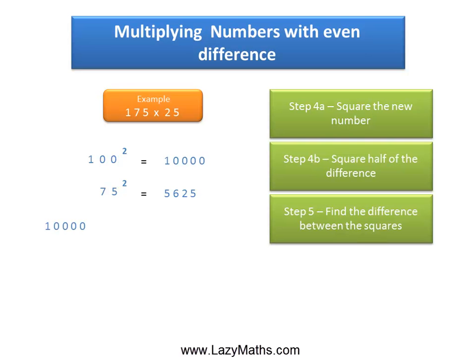And then the final step involves subtracting 5625 from 10,000. 10,000 minus 5625 gives you 4375 as our final answer.